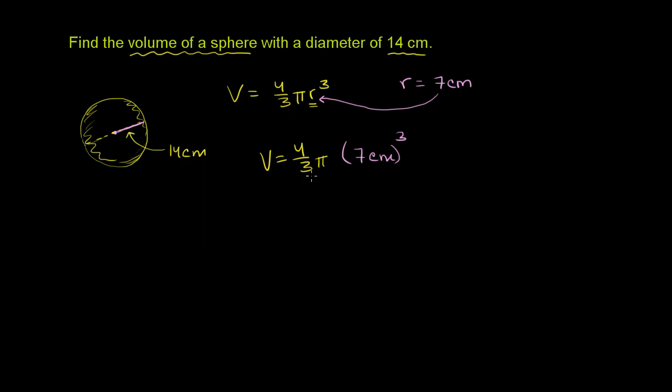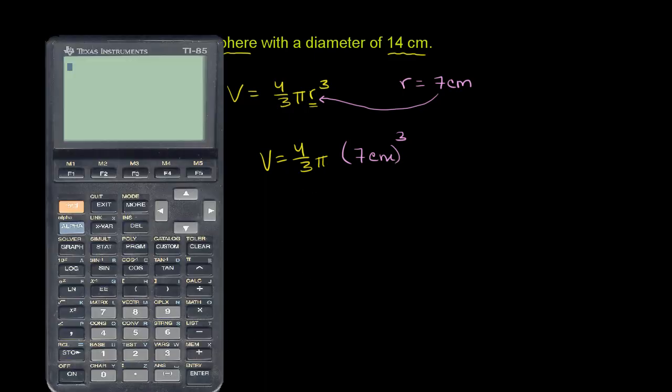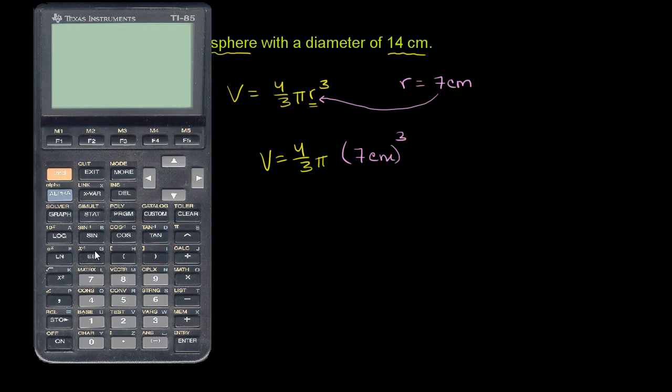Some people even approximate it with 22 over 7. But we'll actually just get the calculator out to get the exact value for this volume. So my volume is going to be 4 divided by 3. And I don't want to just put a pi there, because that might interpret it as 4 divided by 3 pi.